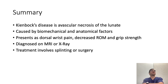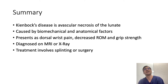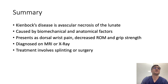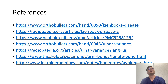In summary, Kienböck's disease is avascular necrosis of the lunate, caused by a variety of biomechanical and anatomical factors. Patients present early with wrist pain, then progress to decreased range of motion and grip strength. It's diagnosed using imaging, and treatment can be splinting or surgical. Thank you very much.